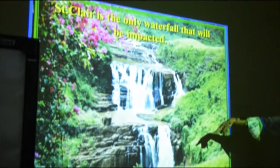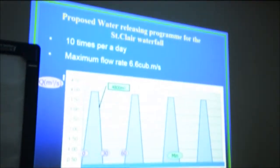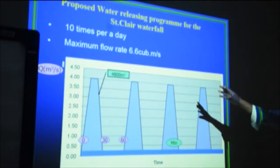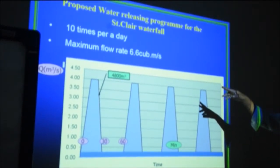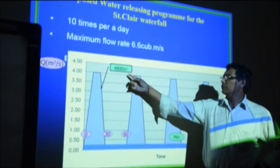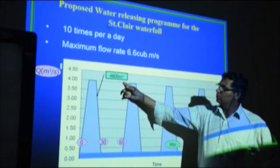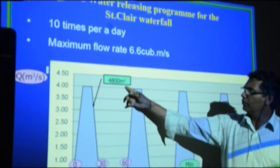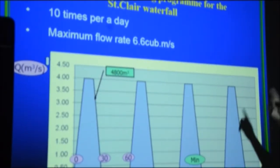In Saint Clair of course we are tapping the water. So now actually this was the original plan, we were supposed to release 48,000 cubic meters of water per day.